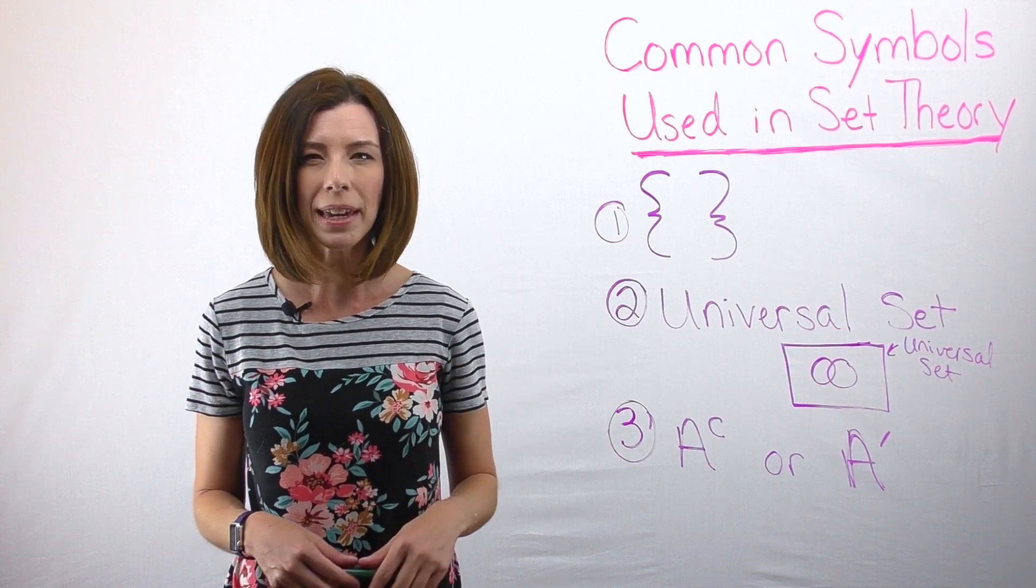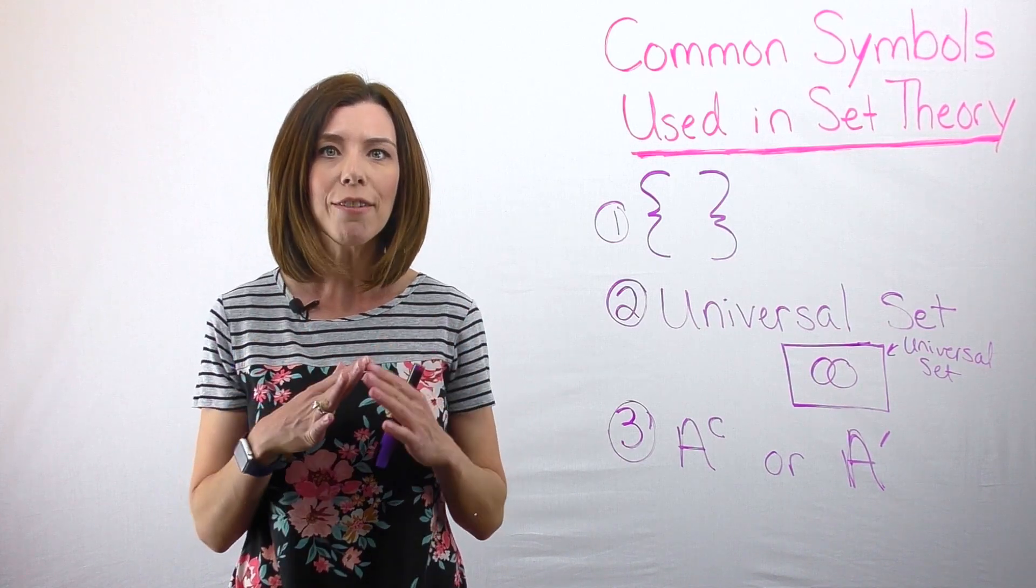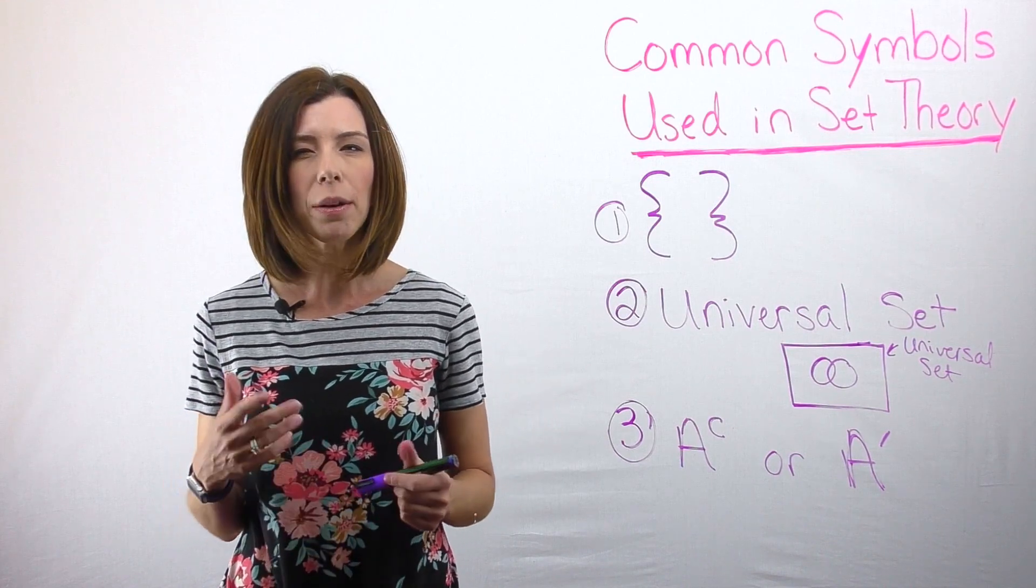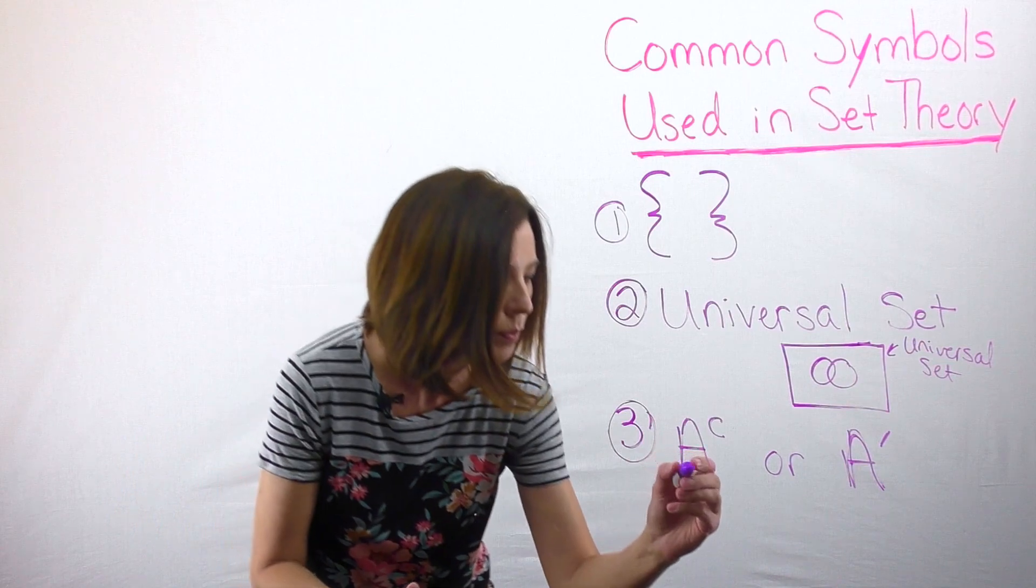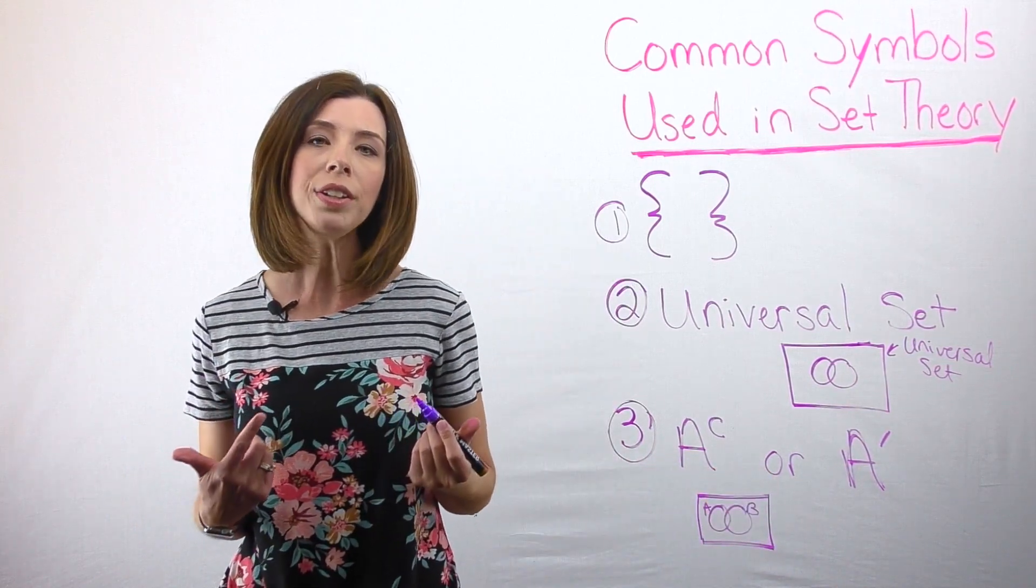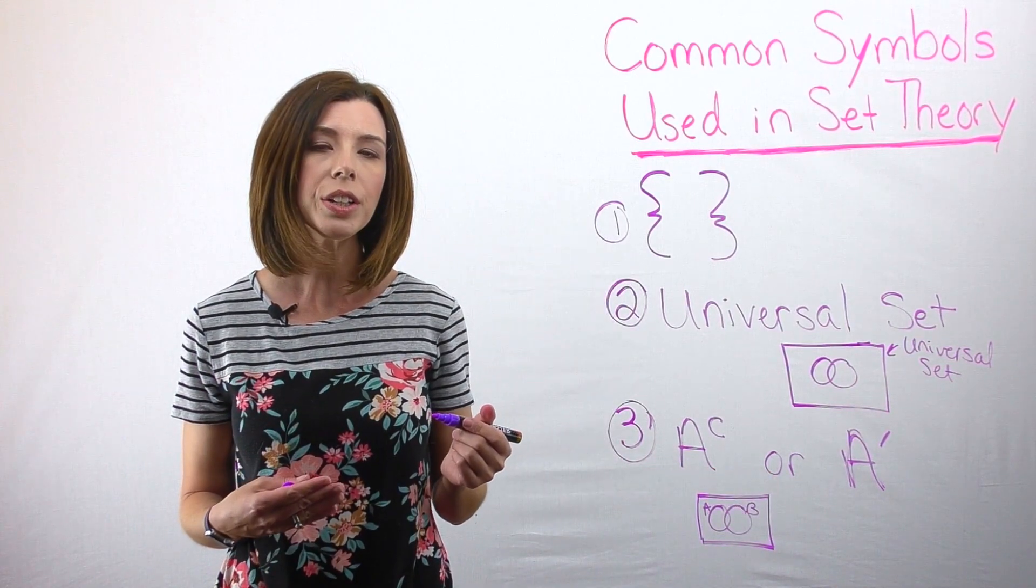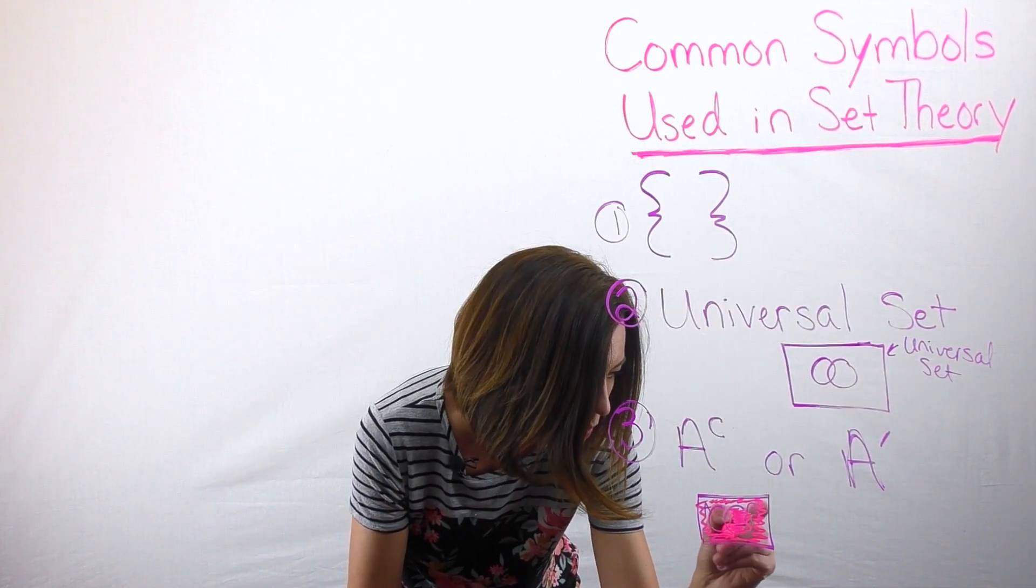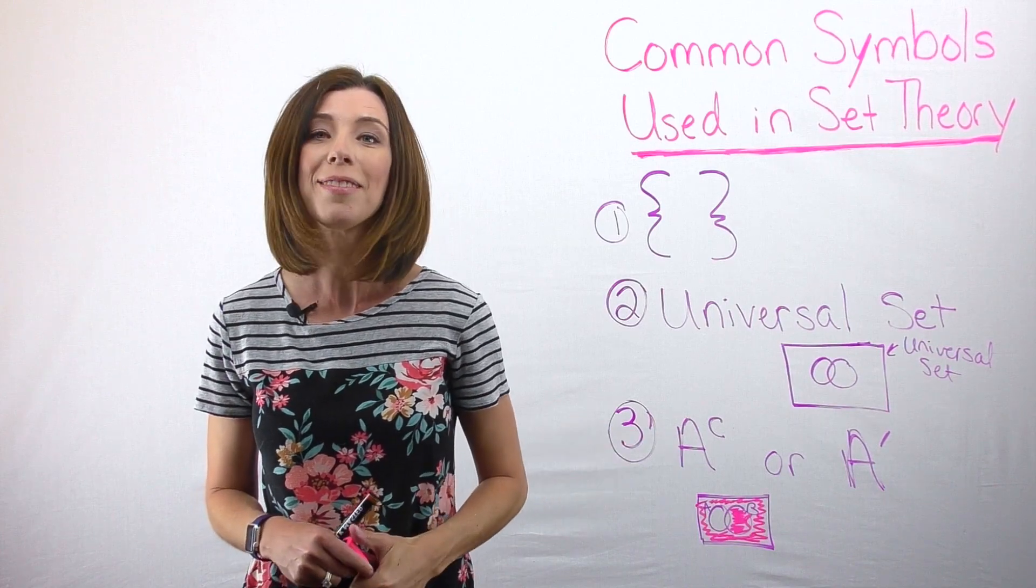Either of these mean the complement of A. What would the complement be? Literally, we're saying everything except for A. That's what we're interested in. So if I were to draw a picture with a Venn diagram and I'm going to shade the complement, I'm literally going to shade everything except for A. It would look like this. That would be the complement of A.